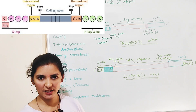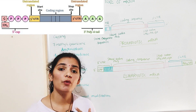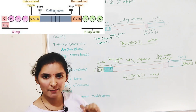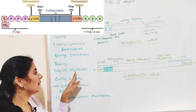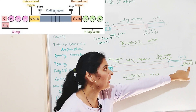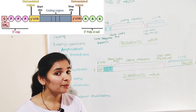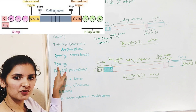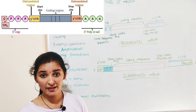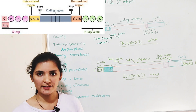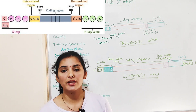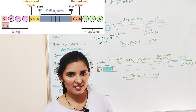Following the 3' UTR region is the poly-A tail. As the name indicates, poly-A means numerous adenine nucleotides are added to the 3' end of eukaryotic mRNA — about 150 to 200 adenine nucleotides are added to the 3' end by the enzyme poly-A polymerase. This process is called tailing. The poly-A tail stabilizes the mRNA, which is why it is of great significance.